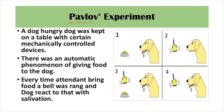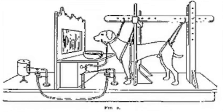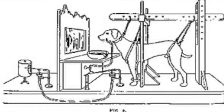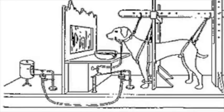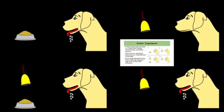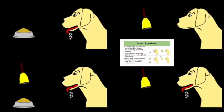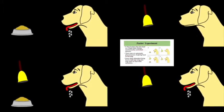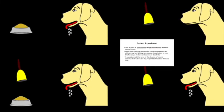Ivan Pavlov, who was a Russian psychologist, performed an experiment on dogs on which he based this theory. He put a hungry dog on a table with certain mechanically controlled devices, and there was an automatic phenomenon of giving food. Every time the attendant brought food, a bell was rung simultaneously. The dog's response was salivation — saliva was produced from the dog's mouth as it watched. This activity of bringing food along with the bell was repeated several times.